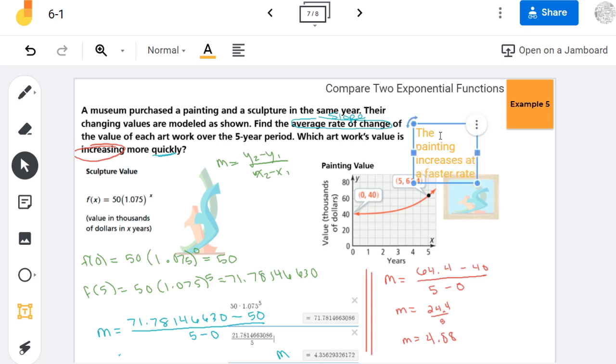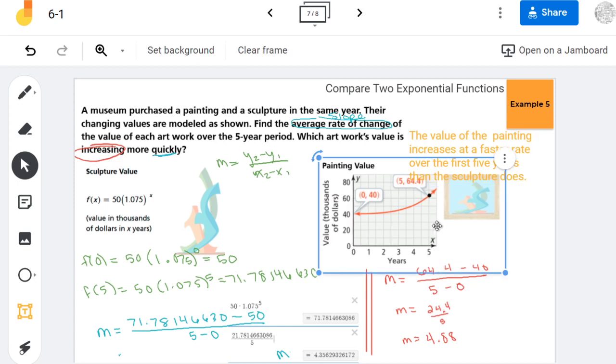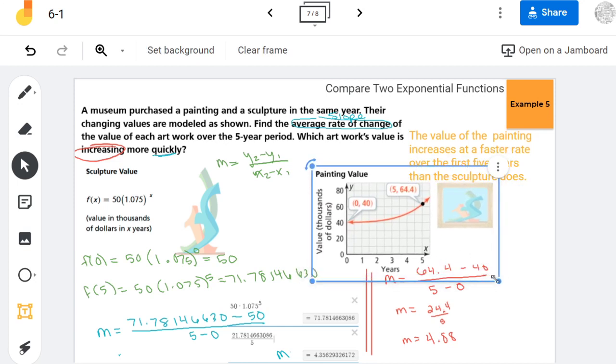The value of the painting increases at a faster rate over the first five years than the sculpture does. And there we go. Our word problem now has a word solution.